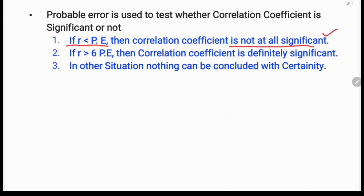If r is greater than 6 times the probable error, then the correlation coefficient is definitely significant. It is definitely reliable.